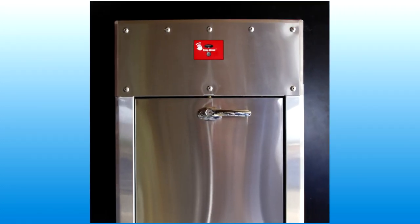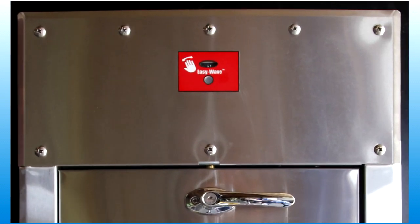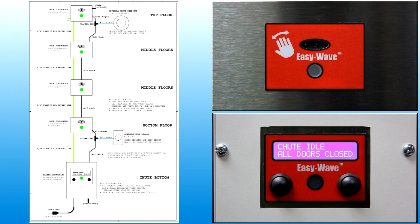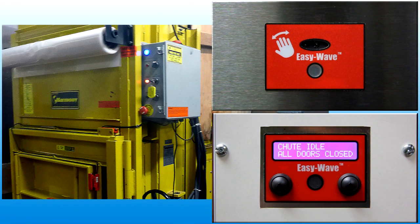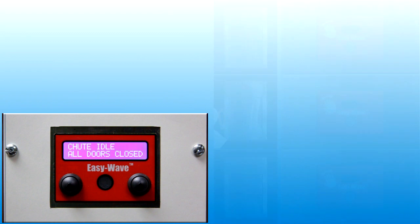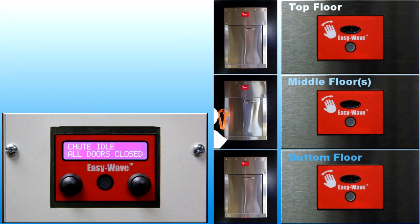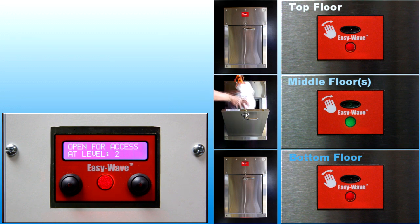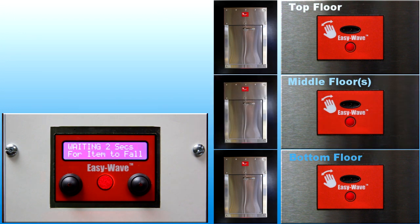Chute intake doors are the main focus of this video. However, we need to understand that the control system will lock and unlock doors based on the condition of all equipment in the chute. For example, if a trash compactor at the base of the chute is full, the control system will not unlock the intake doors. However, the most common feature of the control system is to unlock only one door at a time. When one door is open, all the other doors will be locked.